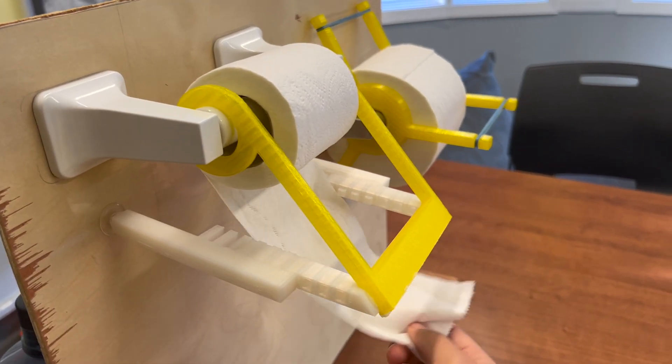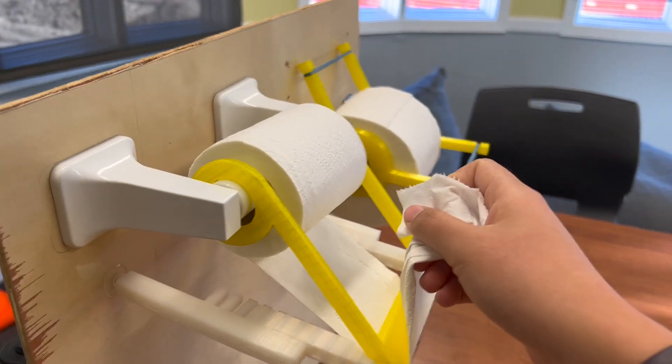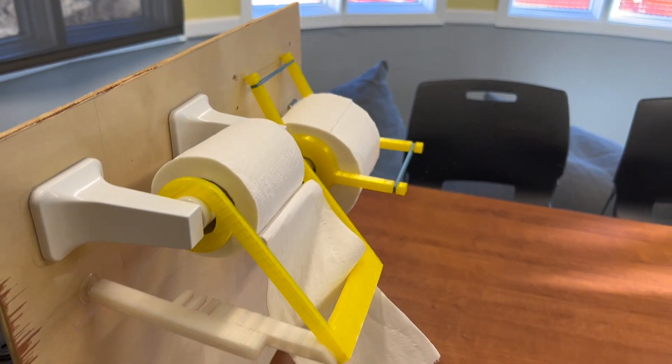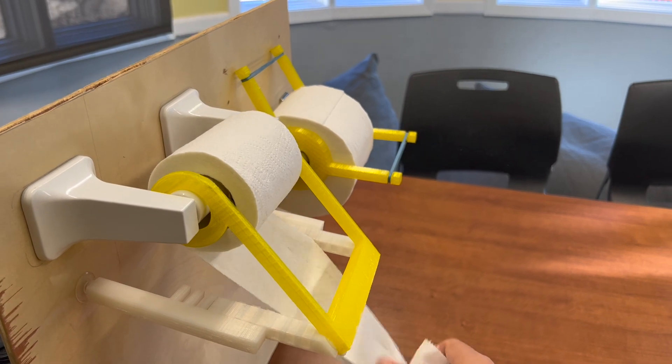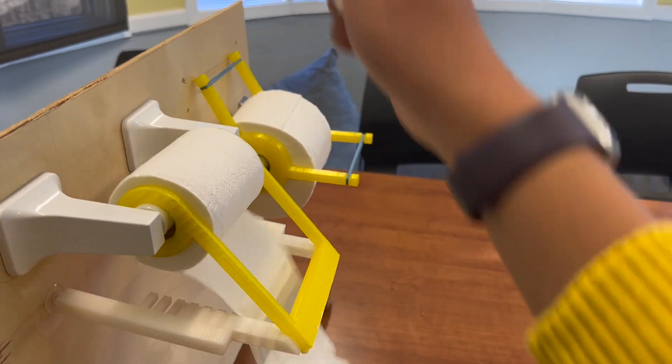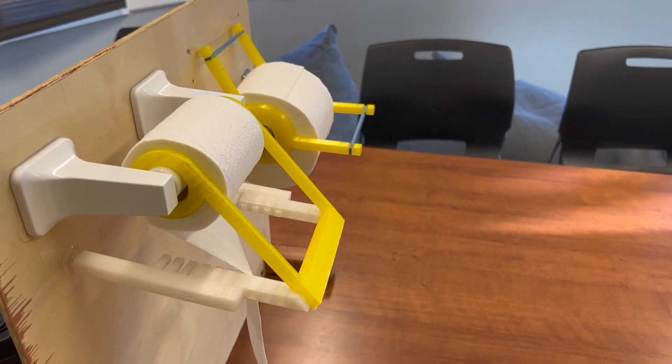Here we have a demonstration of it working. You just grab the piece of toilet paper and pull it against that. You pull it to your desired length and pull up, and it tears easily. That was just using one hand.